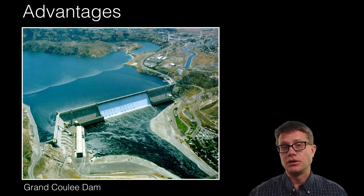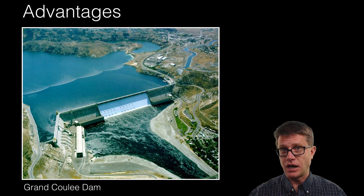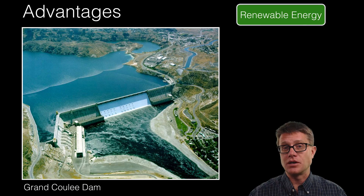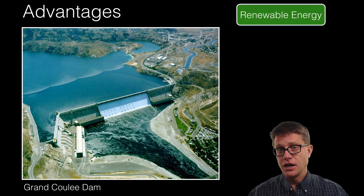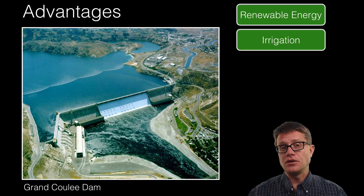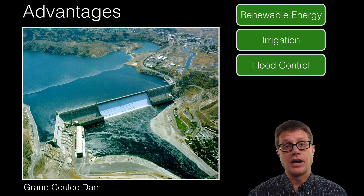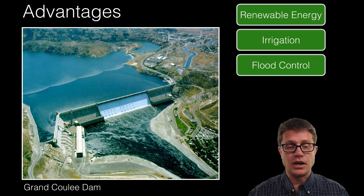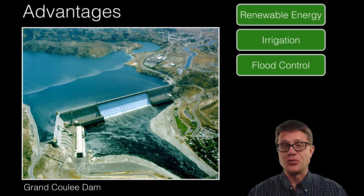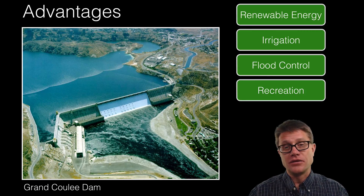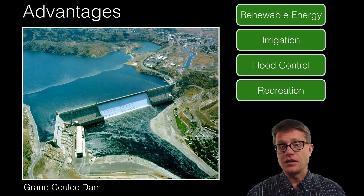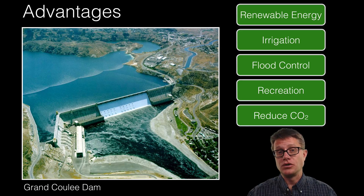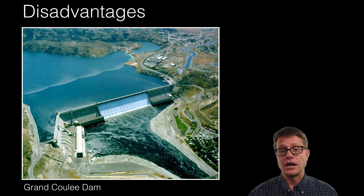Looking at the Grand Coulee Dam — the largest concrete structure ever built on our planet, located in Washington State — some advantages: it is a renewable form of energy, as the sun lifts the water and as it flows down we tap that energy. We can use the water to irrigate crops in nearby areas. This area was plagued by floods in the past, which was one reason for building the Grand Coulee Dam, though flood control required cooperation with other dams in Canada. We have created a giant reservoir and recreation area behind it. And finally, these are not carbon dioxide producers — we can reduce our emissions by running more hydroelectric power.